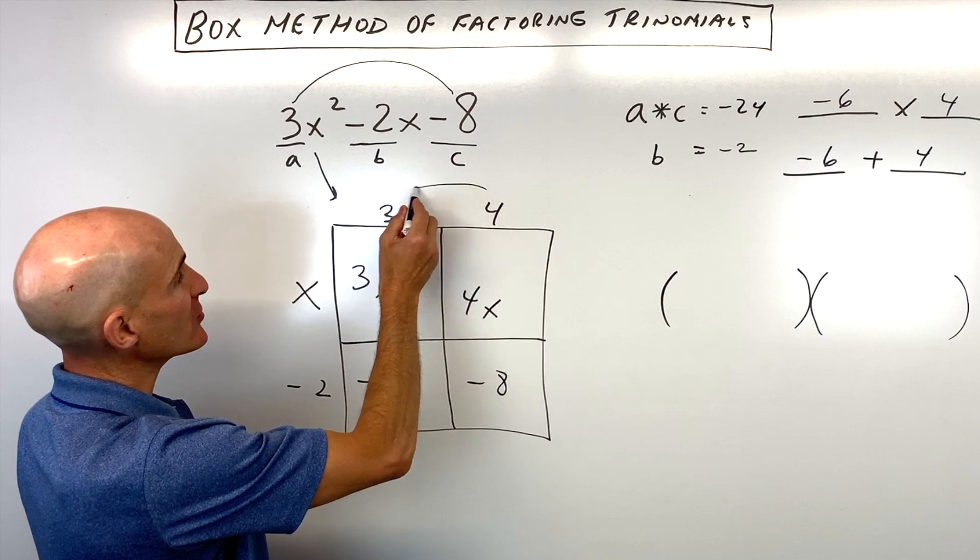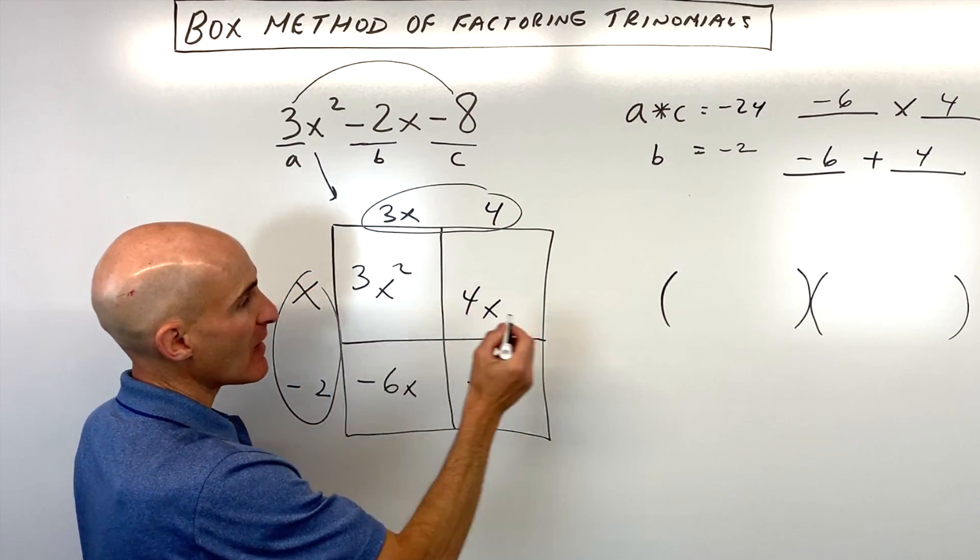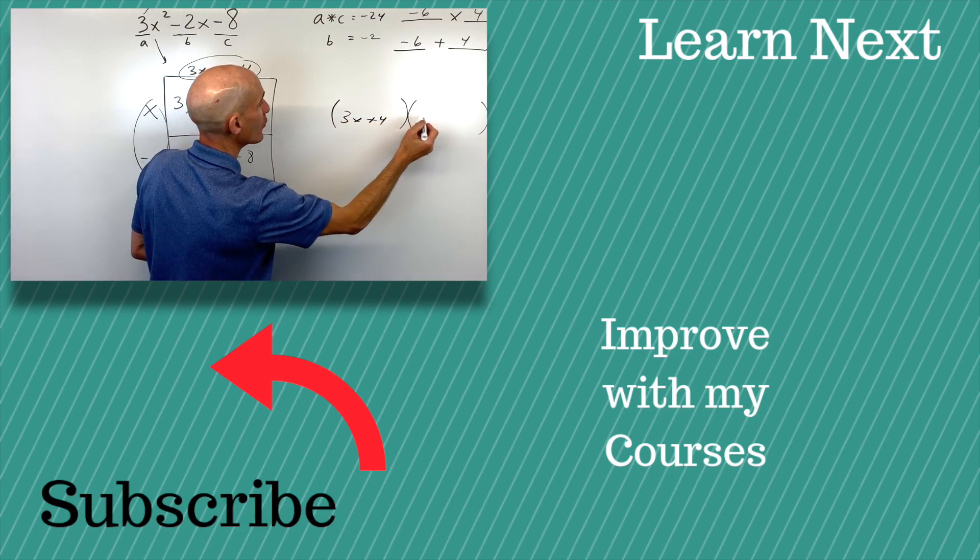And now we have our two factors. It's 3x plus 4 and x minus 2.